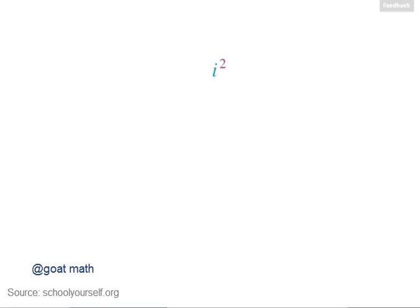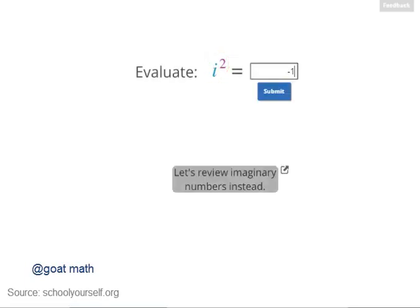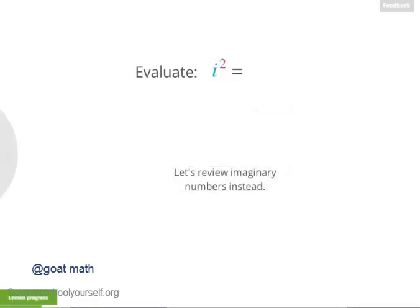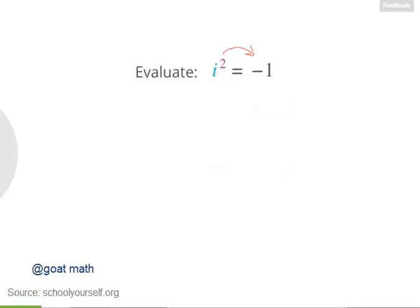Let's start with i, the imaginary unit, and let's square it. What real number does i squared equal? i squared is defined as being equal to negative 1.